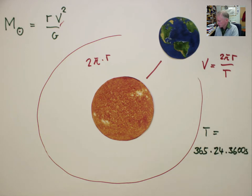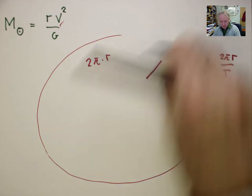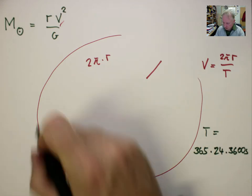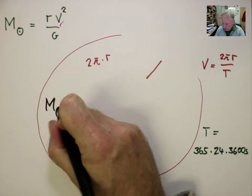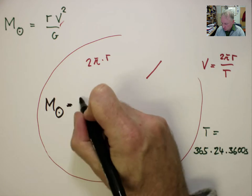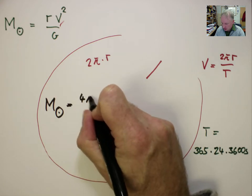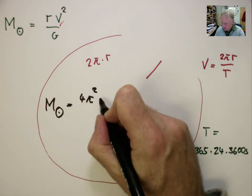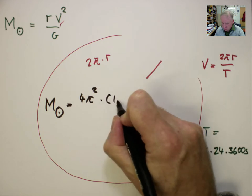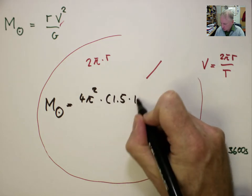And if we now substitute, we find that the solar mass is therefore equal to 4 pi squared times 1.5 times 10 to the 11 meters cubed.